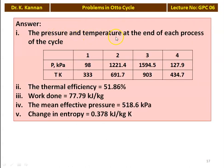Answers: P1 equals 98 kPa, P2 equals 1221.4 kPa, P3 equals 1594.5 kPa, P4 equals 127.9 kPa. T1 equals 333 K, T2 equals 691.7 K, T3 equals 903 K, T4 equals 434.7 K. Thermal efficiency is 51.86 percent, work done equals 77.9 kJ/kg, mean effective pressure is 518.6 kPa, and change in entropy is 0.378 kJ/kg·K.